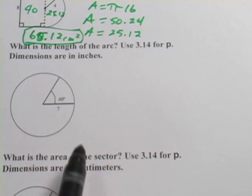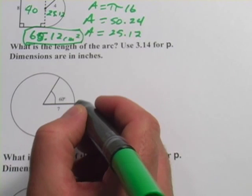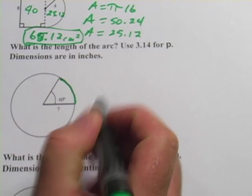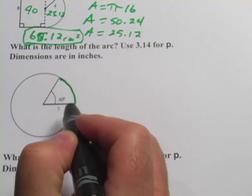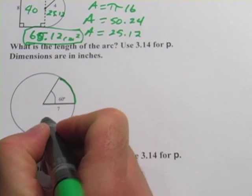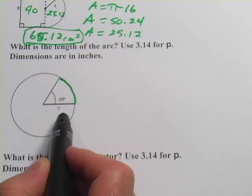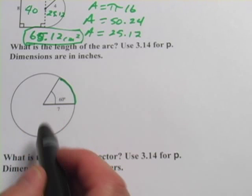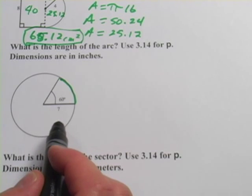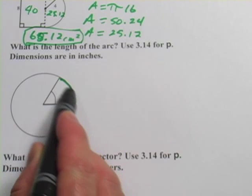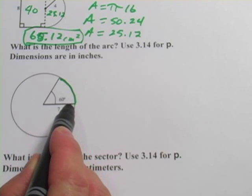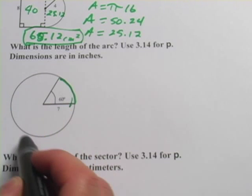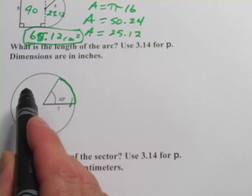This one says what is the length of the arc, and I guess they mean this section right there. Use 3.14 for pi and dimensions are in inches. And what we see here is that it gives us the length of a radius, that's useful, and it also tells us the degrees of the arc. The way you want to think about this is that this segment right here, this arc, which is the part around the outside that's cut off by the angle, is some fraction of the whole circumference of the circle.